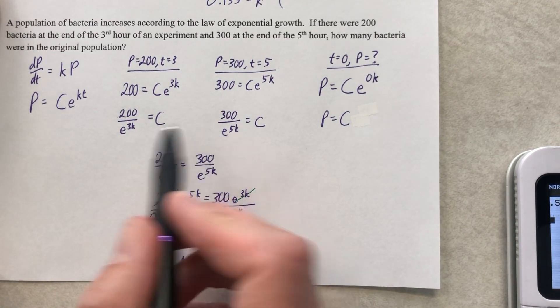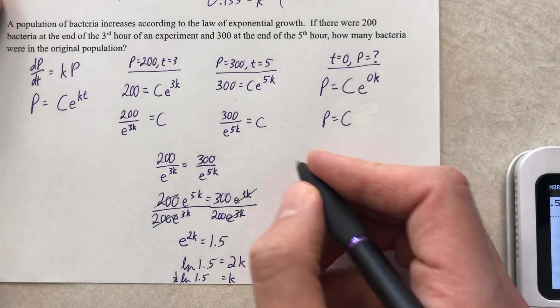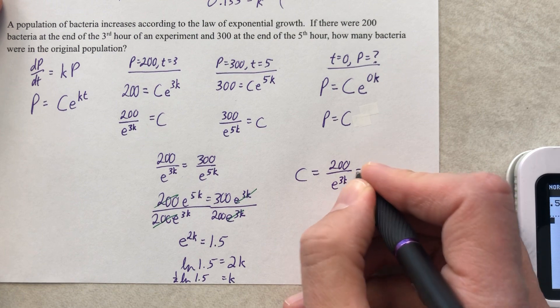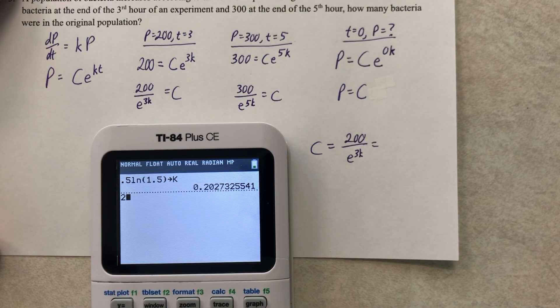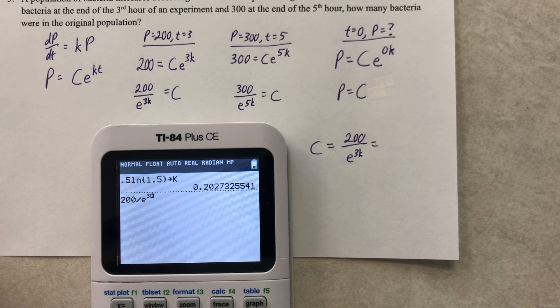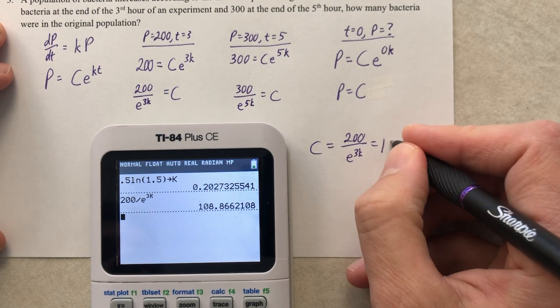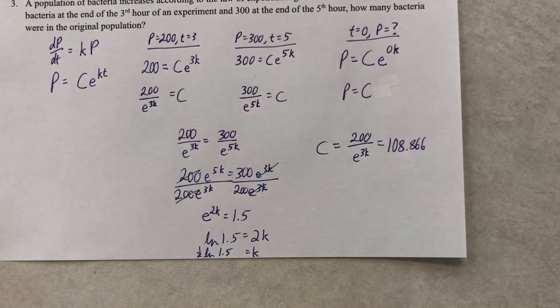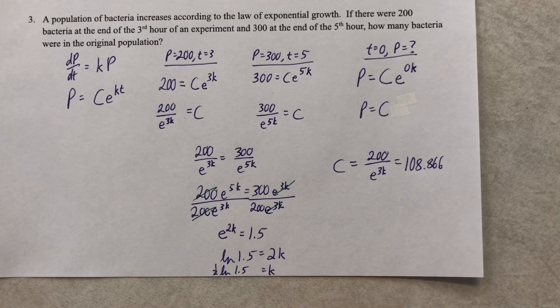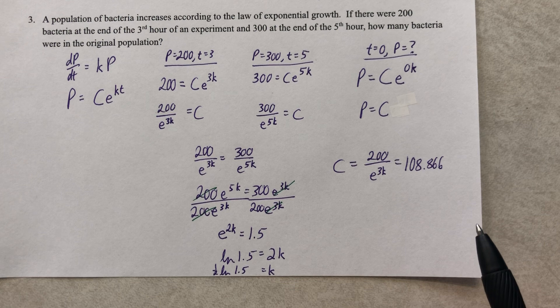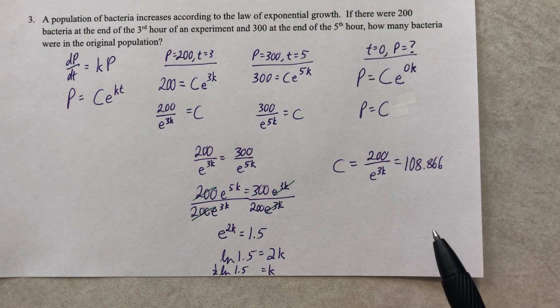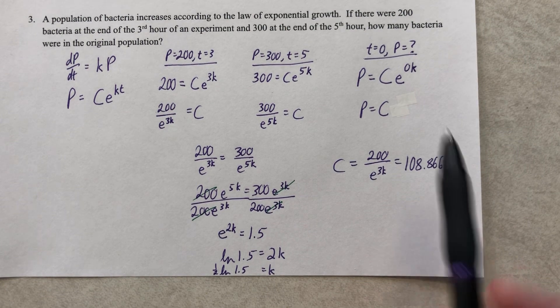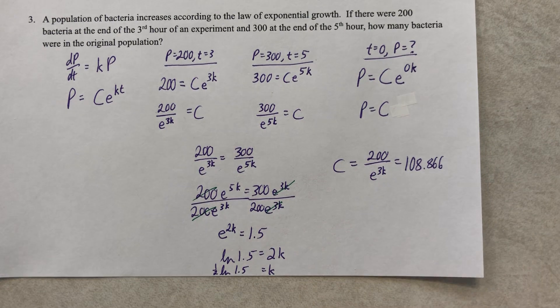What I could do is just take this k and plug it into either one of them. Let's use that one. C equals 200 over e to 3k, and I got 108.866. In this problem, I should have told you where to round. I should have said round to the nearest bacteria because it's bacteria. But the standard practice in this class is to round to three decimal places. So in the convention of the habit, let's use three decimal places. But for practicality, bacteria, yeah, it'd be 109. So that's what you'd have.